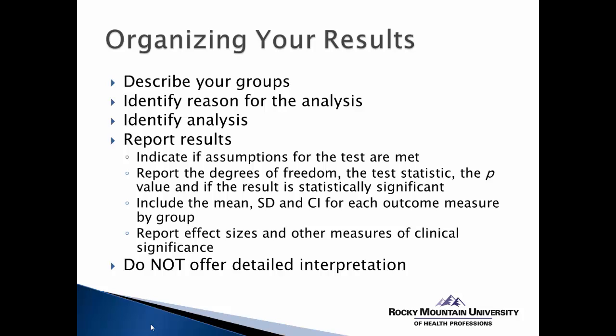One of the first things is to gather data that can help you describe your groups. In the case of doing a t-test, presumably you will have two groups in which you will need to describe demographics as well as the outcome measures for each group. Within your results section narrative, you'll need to identify the reason for the analysis — which hypothesis are you testing — and identify in detail the actual analysis that's been done. You'll need to report the results of that analysis, indicate if assumptions for the test are met, and report specific outputs including degrees of freedom, the actual test statistic value, the p-value, and indicate if the result is statistically significant.